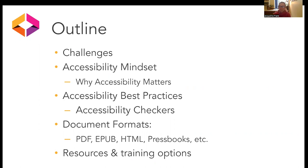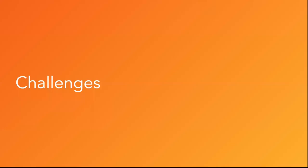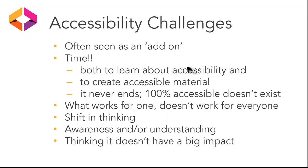Today we're going to briefly talk about some challenges, what it means to have an accessibility mindset, and why accessibility matters in general. Then we're going to dig into some best practices, including accessibility checkers, different document formats for OER when you are publishing, and some more resource and training options as well. For those that had a chance to review unit one already, a lot of this is covered, but we're highlighting some of those areas to pay attention to for accessibility.